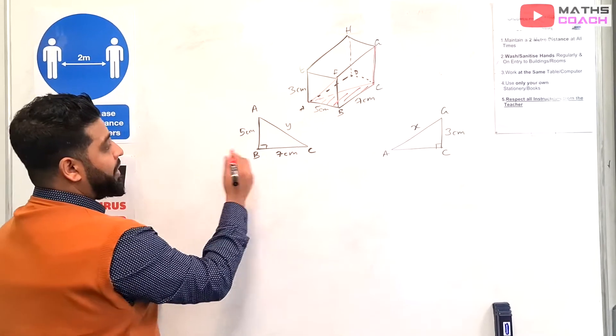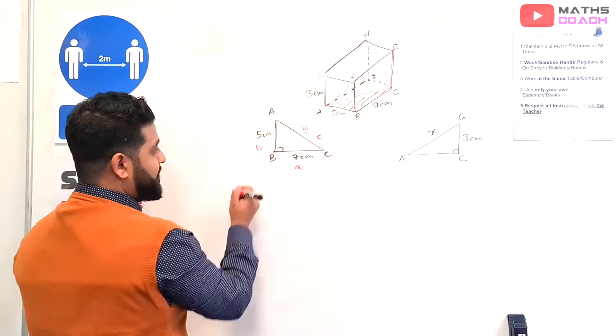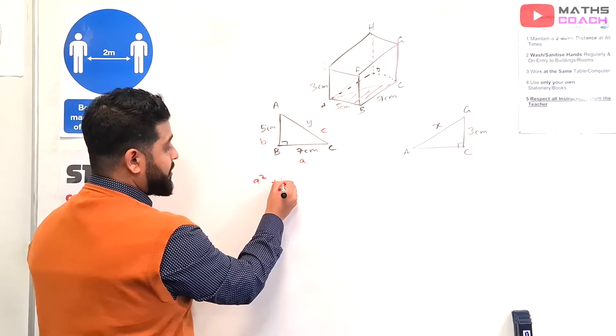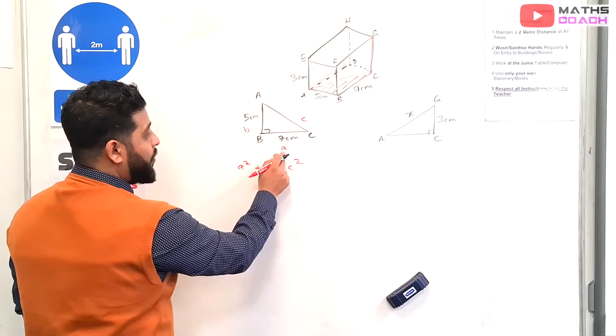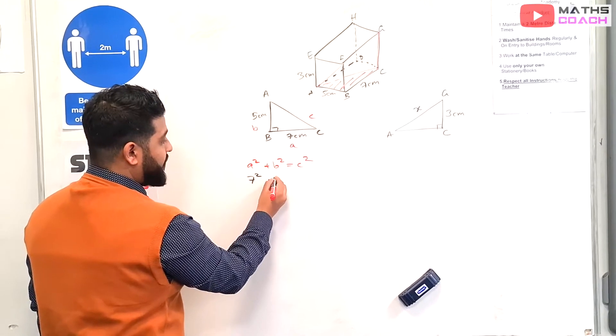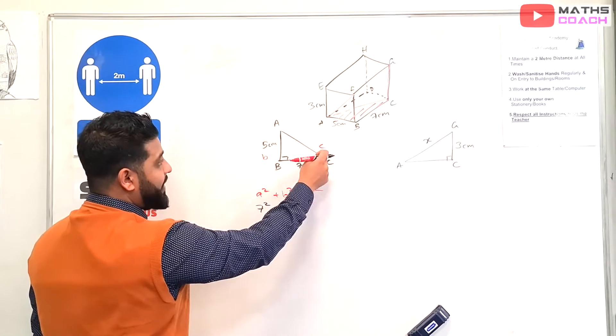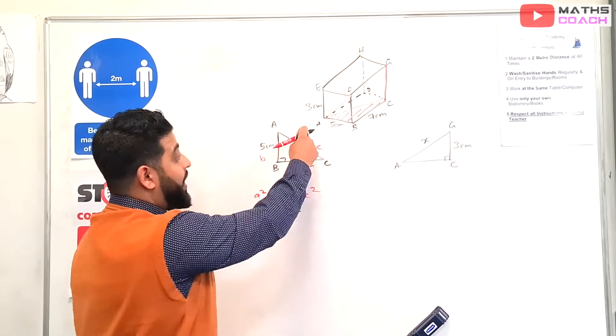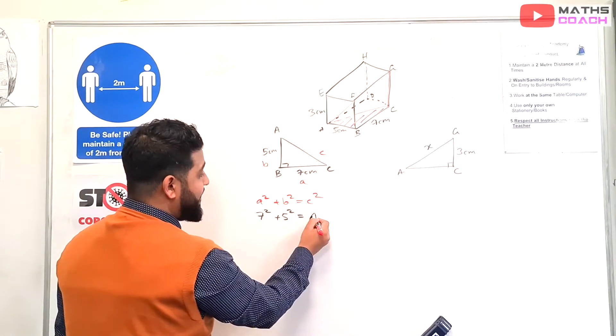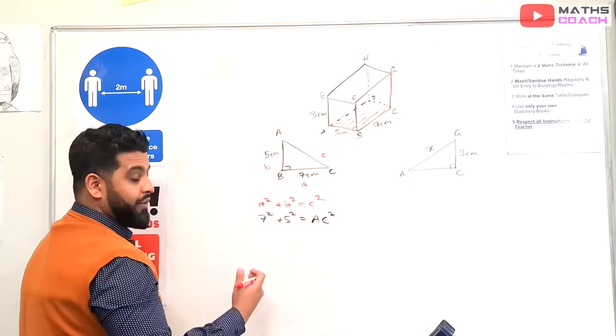So here we go. So what are we going to do? We're going to label our triangle. Remember, this is the most important side, C. And this can be A and this can be B. And I'm going to be applying Pythagoras' theorem. So A squared plus B squared equals C squared. We know that A is 7, so 7 squared. B is 5, so 5 squared is equal to C squared. Now, what we can say is that AC, which I previously had labeled as Y, is probably easier and just more helpful to call it AC squared.